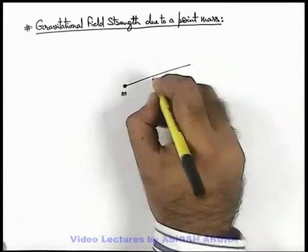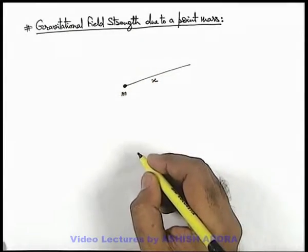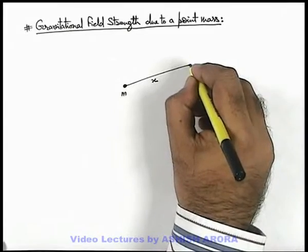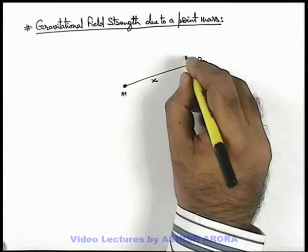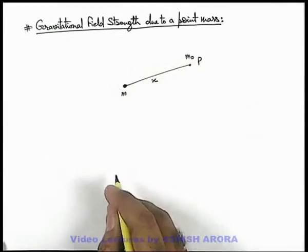Now in this situation at a distance x from the point mass, if we are having a point p and we place a test mass m₀ over here.